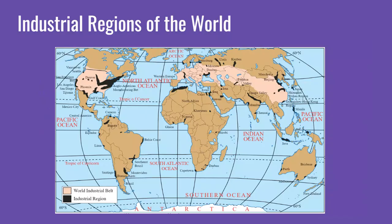This map shows the industrial regions of the world, including the so-called world industrial belt, which doesn't include Detroit or Southern Ontario, but oh well. As you can see, there are major industrial regions in the United States, as well as Europe and China, and some in Southern and Southeastern Asia.